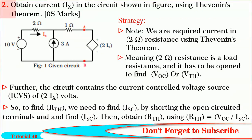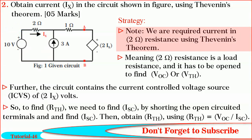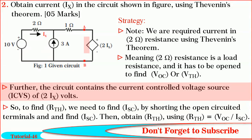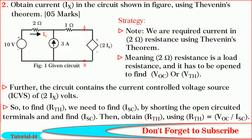Friends, let us solve the question on Thevenin's theorem. In this question, we are required to find current IX through the 2 ohm resistance. Meaning, 2 ohm is a load resistance, so it has to be opened and then we have to find VOC or V-Thevenin. Observe that the circuit contains a current-controlled voltage source of 2IX volts, where IX is the current through the 2 ohm. Note that to find R-Thevenin, we need to find ISC by short-circuiting the open-circuited terminals.